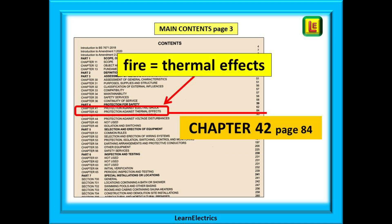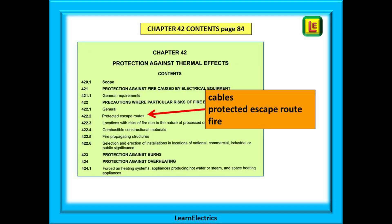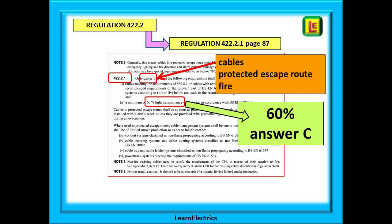Staying on the same page, look under the heading for Part 4 and we can see Chapter 42 — Thermal Effects. Isn't fire to do with thermal effects? It is telling us to go to page 84. Turn to page 84 and we find at the top of the page a contents section for Chapter 42. This has laid out the search information specific to Chapter 42. Regulation 422.2 clearly says 'protected escape routes'. So turn now to regulation 422.2, which we will find on page 86. Somewhere on these next few pages is the answer.